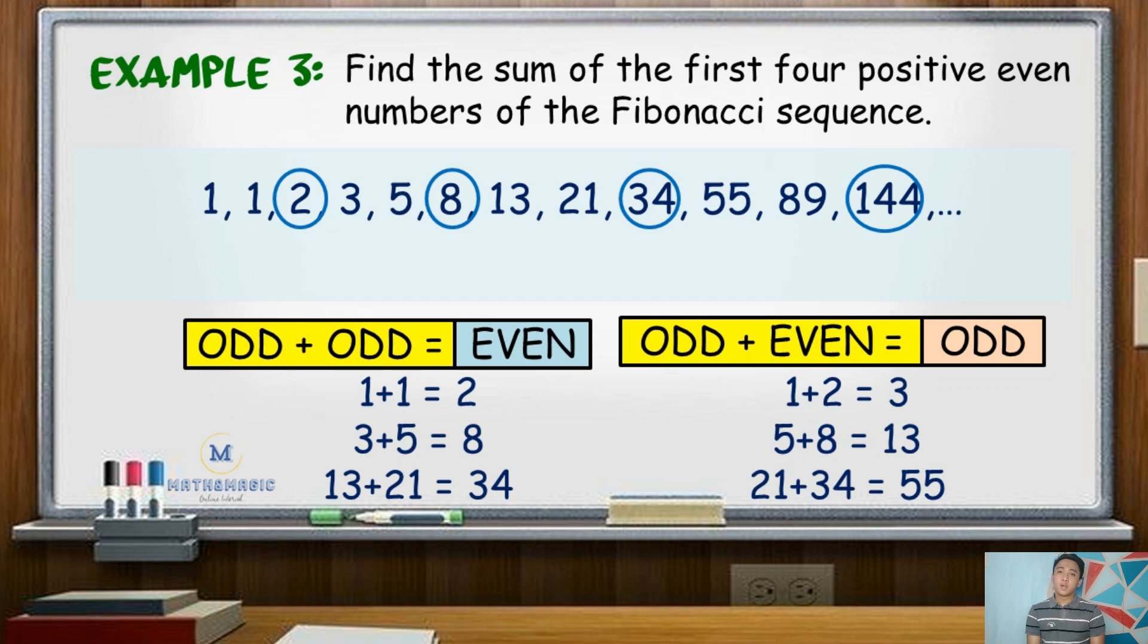So, going back to the question, when 2, 8, 34, and 144 were added, the sum is 188. Thus, the sum of the first 4 positive even numbers in Fibonacci sequence is 188.